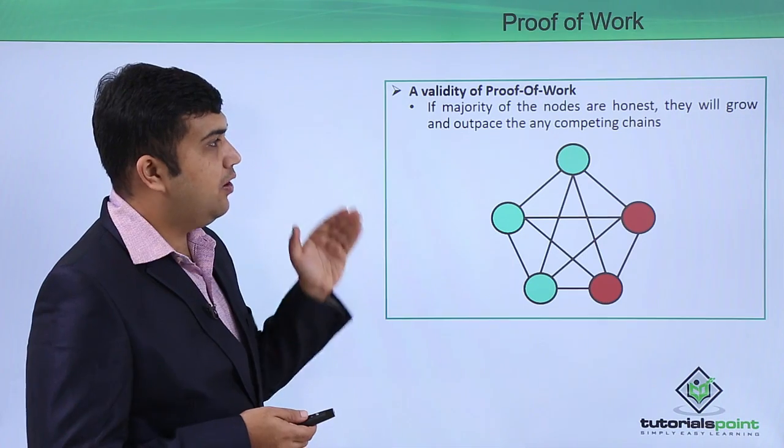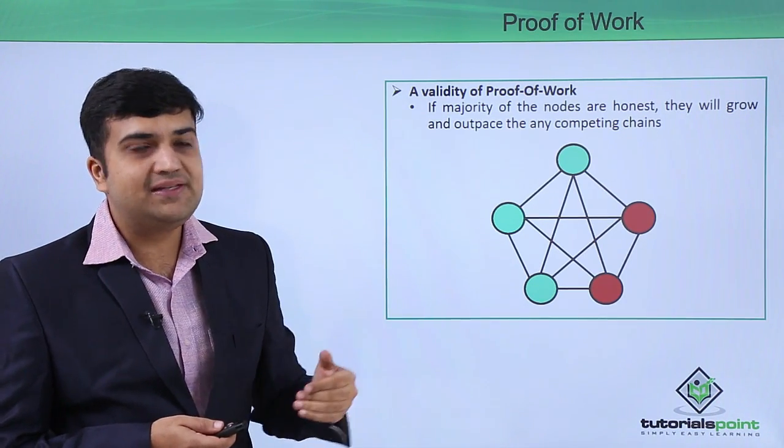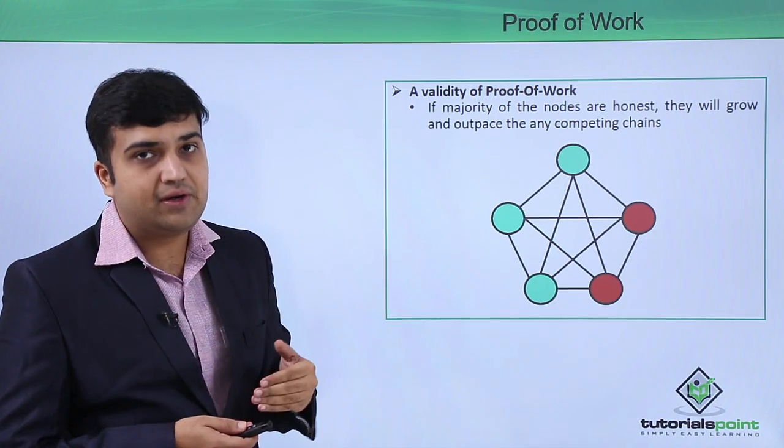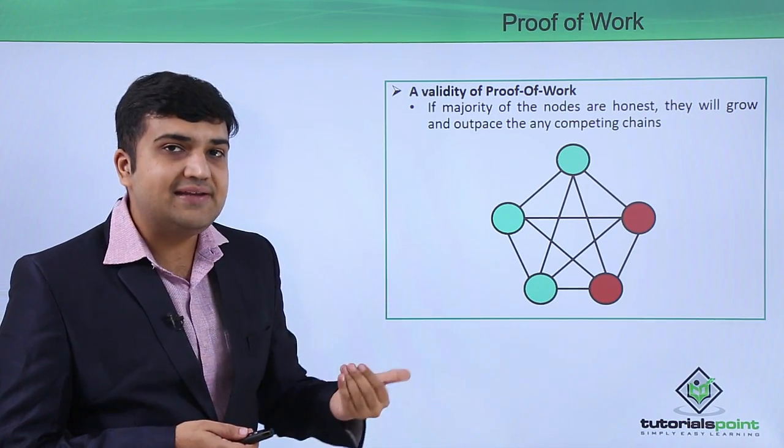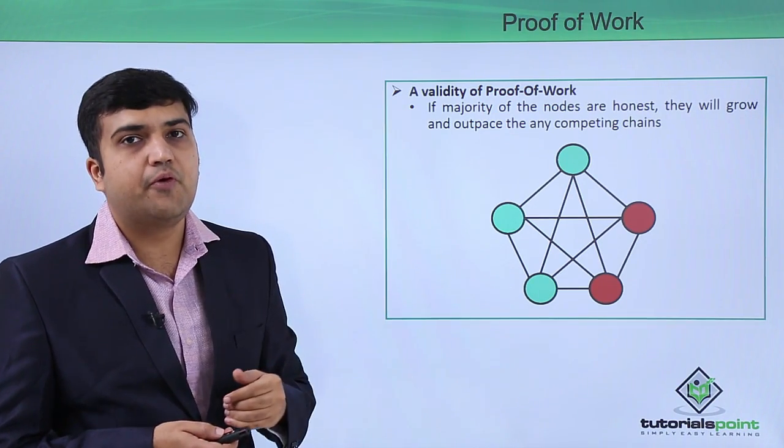If the majority of the nodes are honest, they are going to grow and outpace the ones which are not honest, and will hence be able to establish a trust framework by using the proof of work concept.